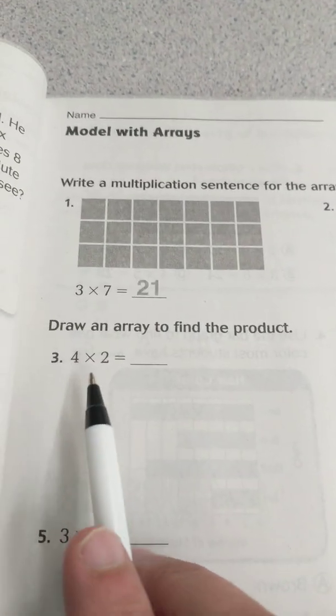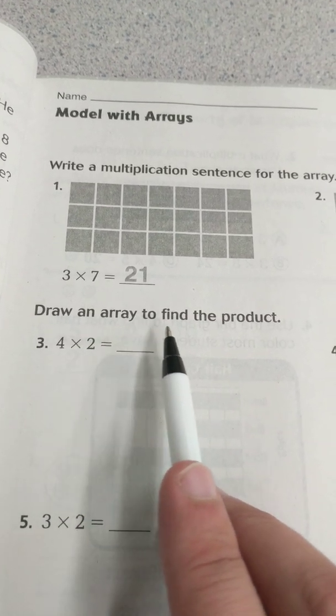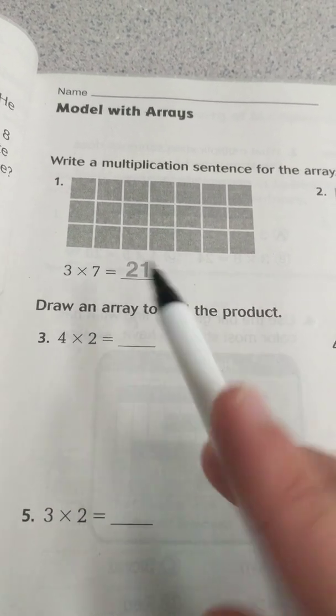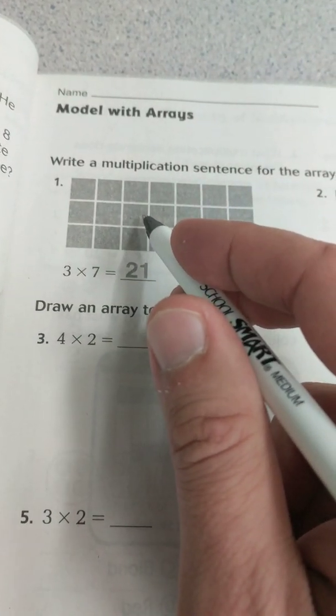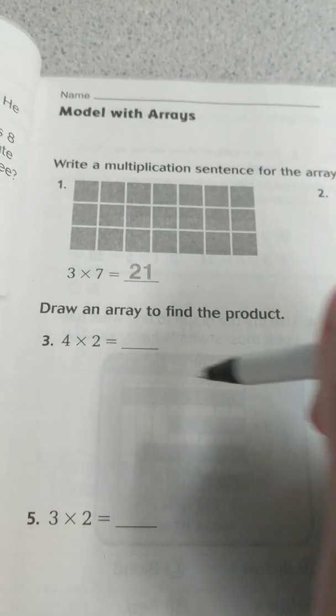Down below here on number 3 it's asking us to draw an array to find the product. So we're going to do the opposite of what's shown there. So we're going to actually draw that instead of going off of the drawing.